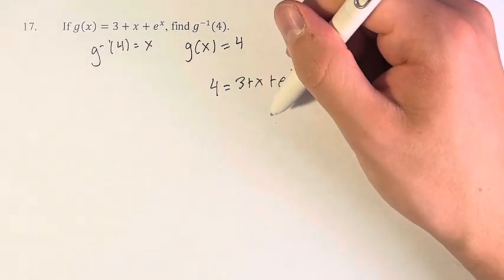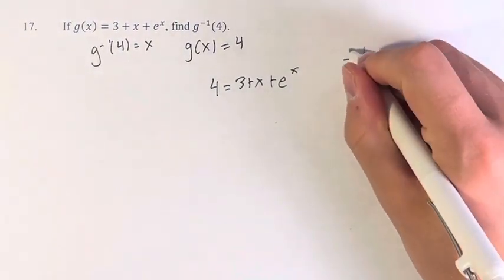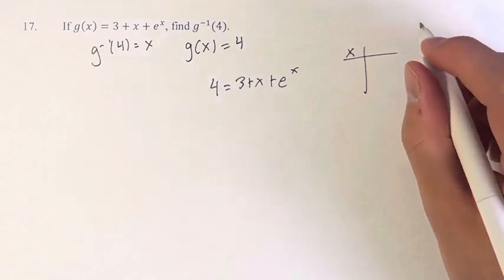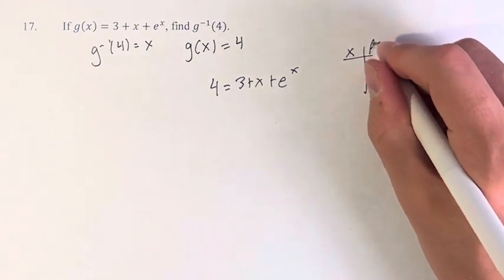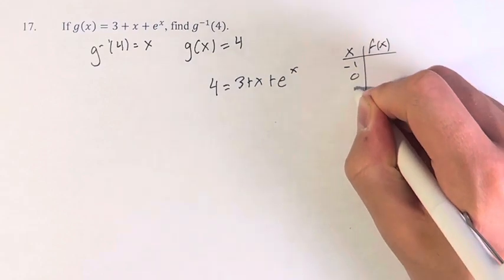How do we solve this? Well, there's not a particular easy way to do it, except to plug in low values. Usually, with these, it's a pretty good idea to plug in negative 1, 0, and 1.